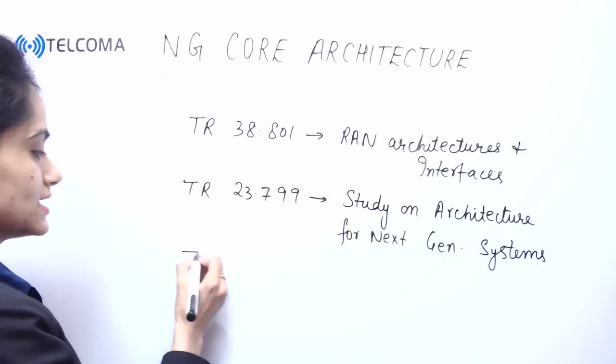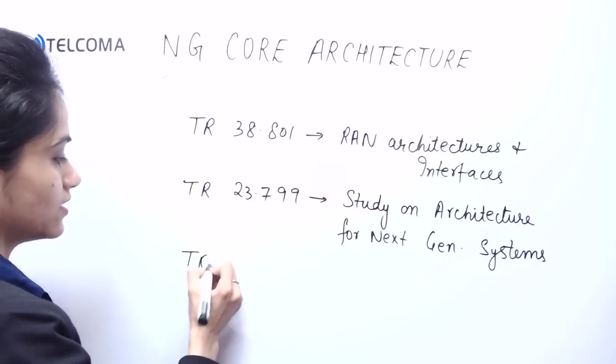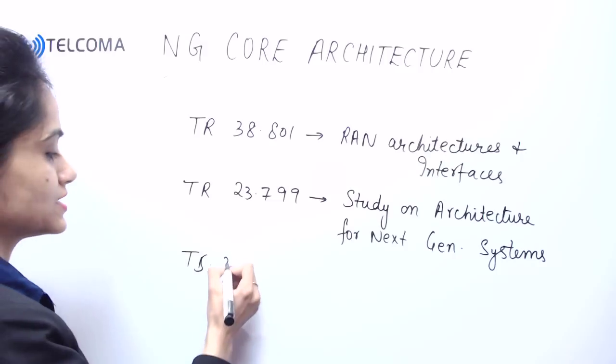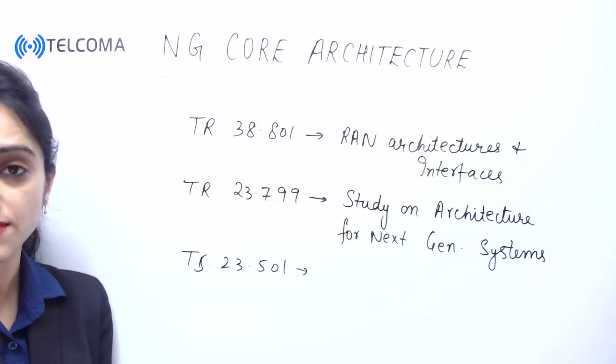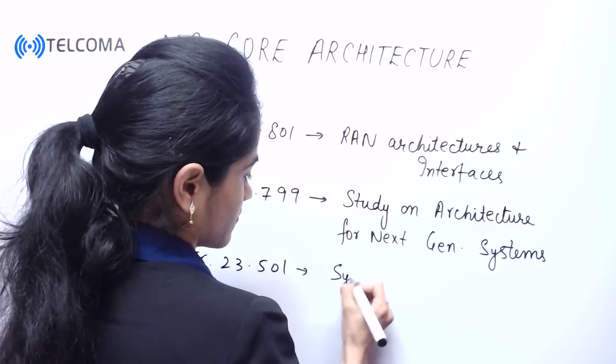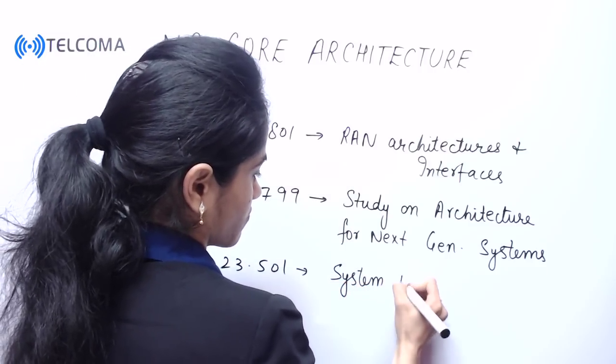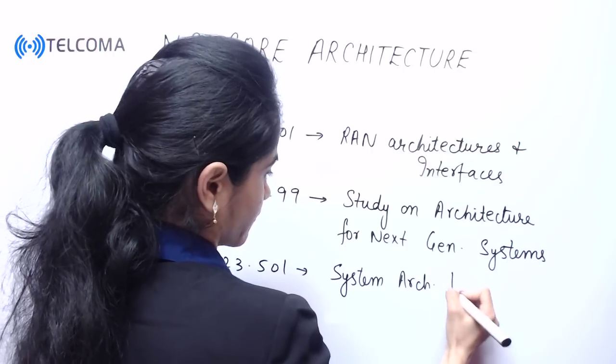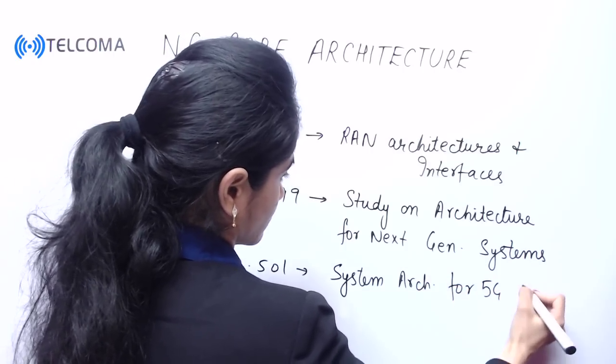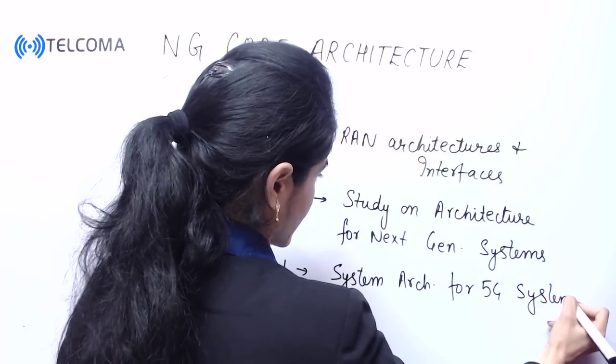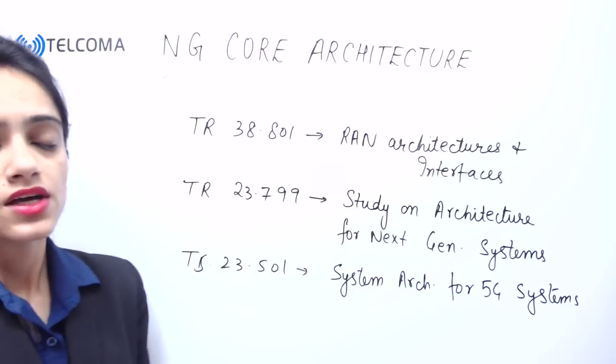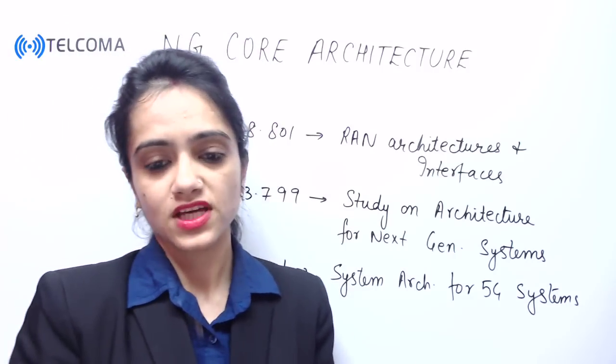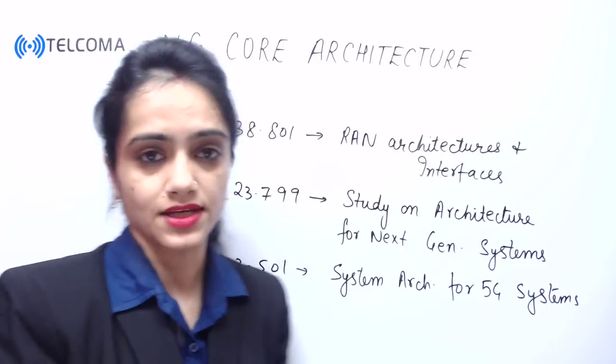Next, we are having technical report or standard as 23.501, and this standard will focus on system architecture for 5G system. Under this specification, we are having two proposed architectures.